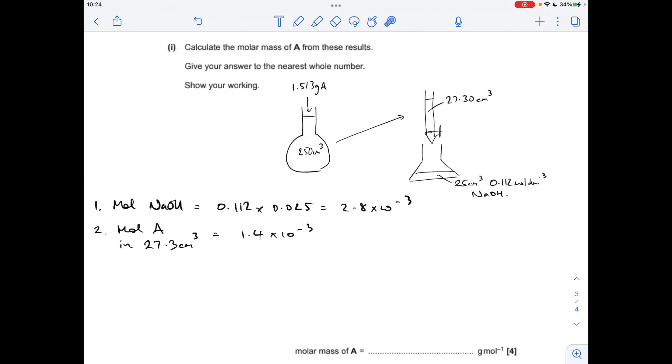So we now need to scale up to how many moles of the acid were in the 250 cm cubed. So all we need to do is divide by the volume that they're in. That'll give us the moles in one cubic centimeter. And then multiply by 250, and that'll give us the moles of the acid in there. So that's coming out at 0.01282. And then the MR of A is just the mass divided by those moles. And to the nearest whole number, it's 118.